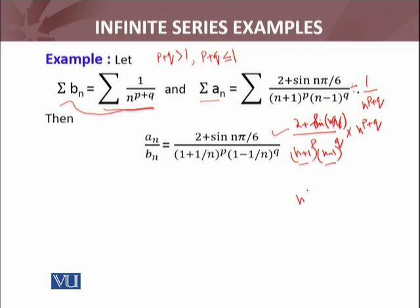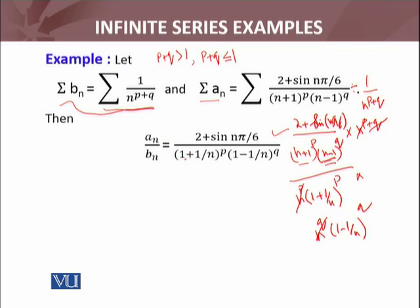Taking n common from both denominator terms: the first gives n · (1 + 1/n)ᵖ, and nᵖ cancels with nᵖ from the numerator. Similarly, taking n common from the second denominator term gives n · (1 − 1/n)ᵍ, and nᵍ also cancels out. So the fraction aₙ/bₙ simplifies to (2 + sin(nπ/x)) / ((1 + 1/n)ᵖ · (1 − 1/n)ᵍ), with the bₙ terms fully cancelled.